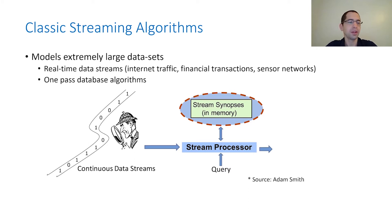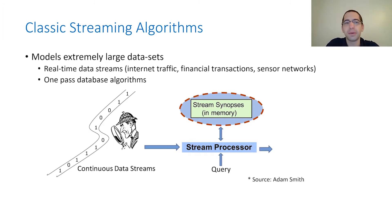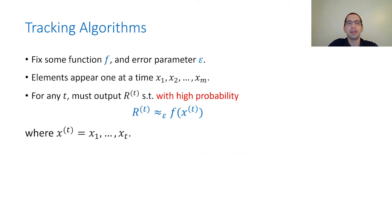Streaming algorithms are very useful in these situations. One typically thinks of a streaming algorithm as a processor that sees a continuous stream of data elements, keeps some synopsis of the stream in its memory, and provides some output — maybe in response to user queries or as an unconditional output.